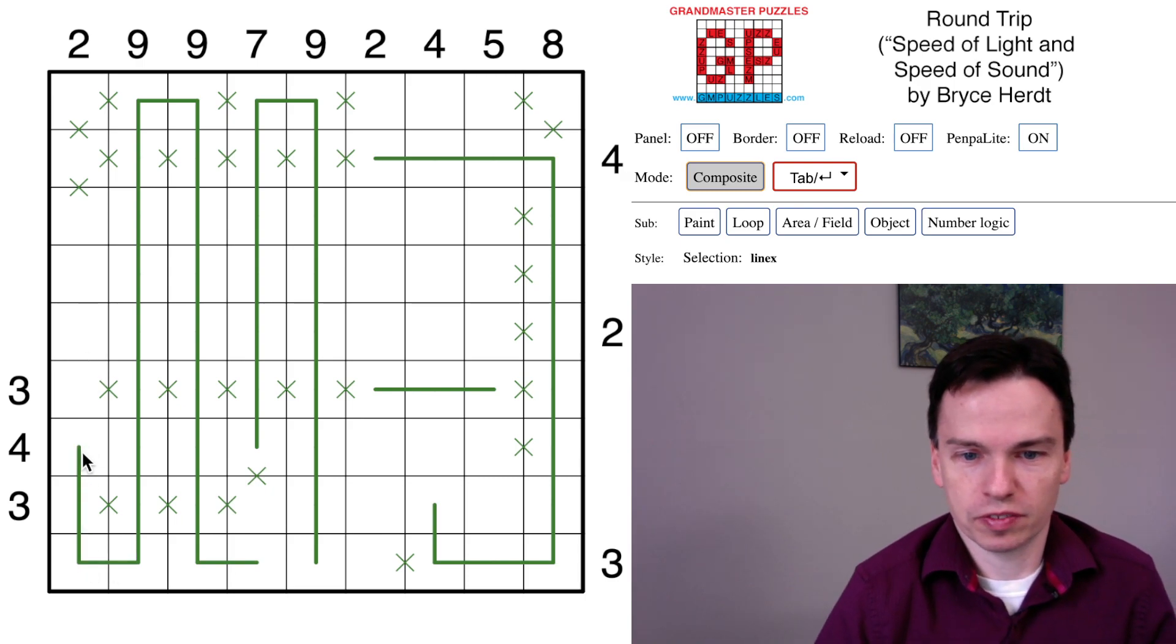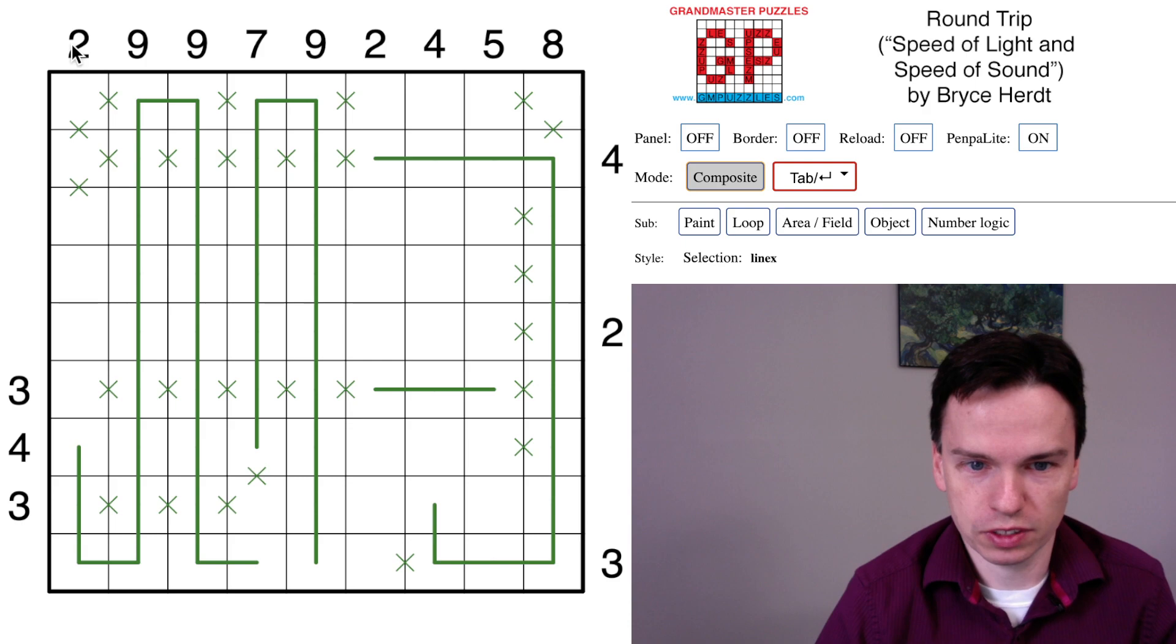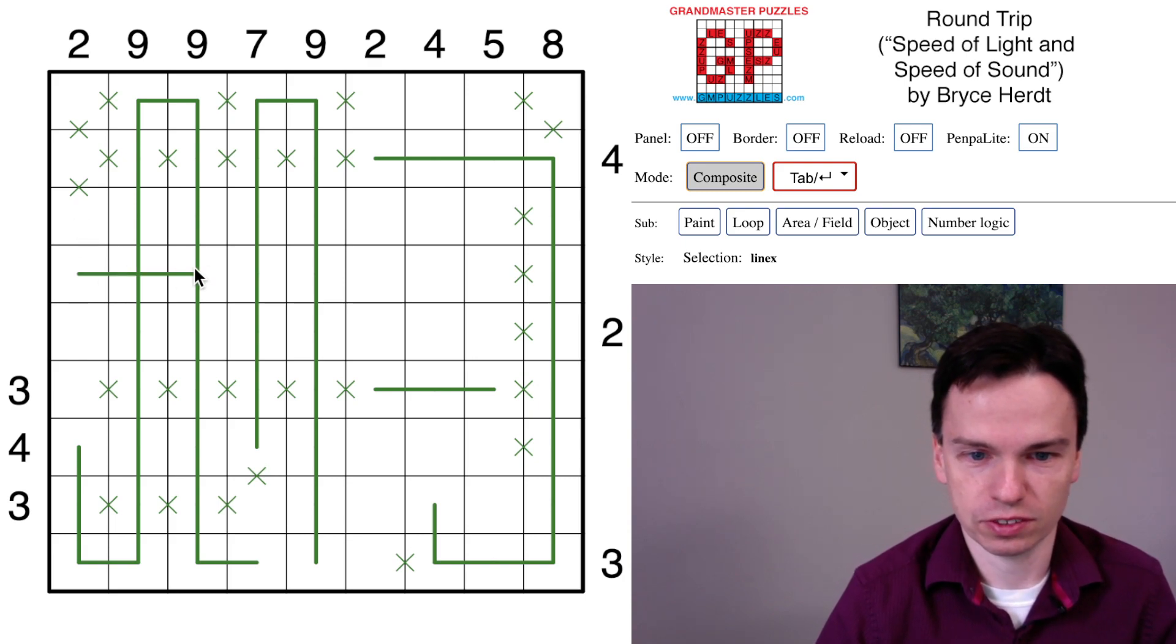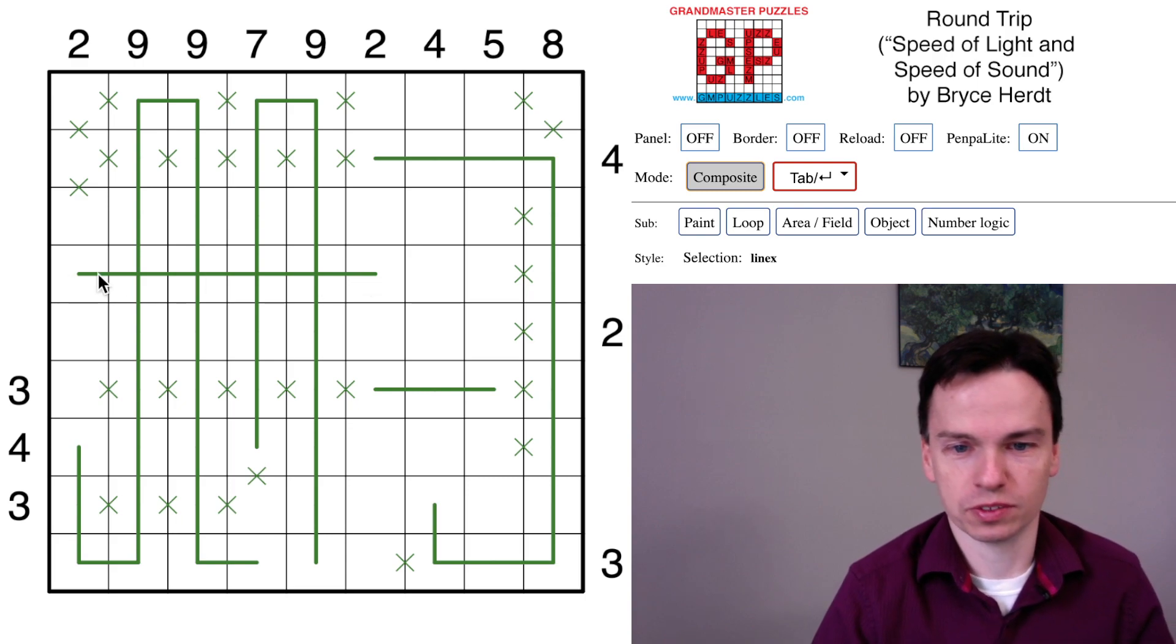We still have to figure out how to get a two in this whole column. It's not going to be coming from this group, which is already longer than that. It's not going to come through this stretch, so we're going to have this edge or this edge be the edge that gets us through two cells, and whichever that is will turn straight here.